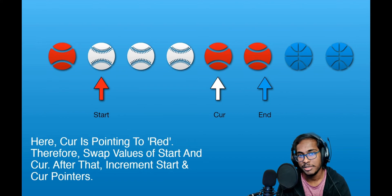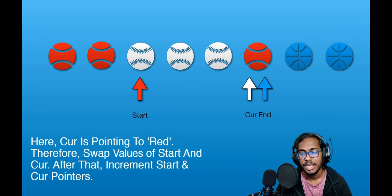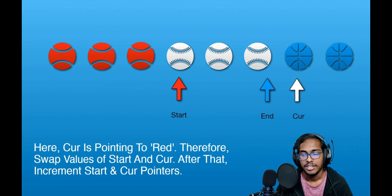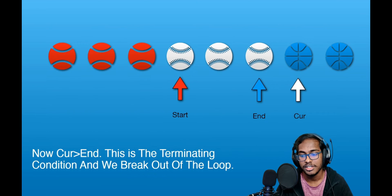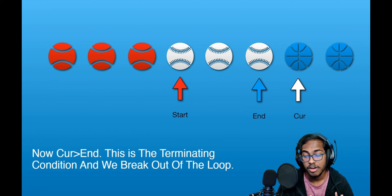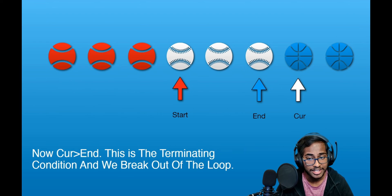Now cut is pointing to a red ball. We swap the balls at start and cut, then increment both cut and start. Cut is again pointing to a red ball, so we swap start and cut again, then increment both. Now we've reached the terminating condition because cut is greater than end, and we break out of the while loop. We can see that we've successfully partitioned the array: all balls before the start pointer are red, all balls after the end pointer are blue, and everything in between is white. This is the beauty of this algorithm.